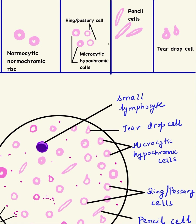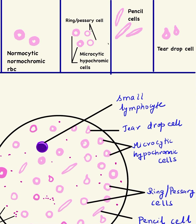The next cells that can be seen are pencil cells, visible in severe iron deficiency anemia. They are also known as elliptocytes because they are elliptical; when they become more elliptical and pencil-shaped, they are called pencil cells. Lastly, teardrop cells can also be seen in iron deficiency anemia.